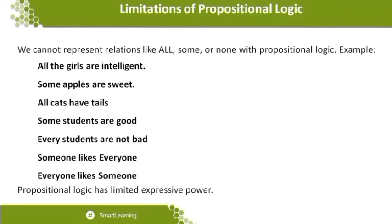Every student is not bad means some students are good. When writing statements, there are alternative statements available — every student is not bad implies some students are good. I can write the alternative statement: 'some students are good' because I wrote 'every student is not bad.' So there are some students who are not bad, meaning some students are really good. This illustrates how we need to specifically state things in propositional logic.